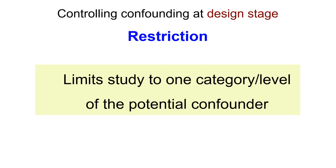Restriction is another way of controlling for a potential confounder at the design stage — meaning while we are conducting the study, during data collection, designing, implementing, recruiting participants, and assigning interventions. Through restriction we can limit study participants to one category or level of the potential confounder.